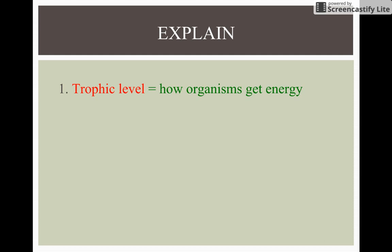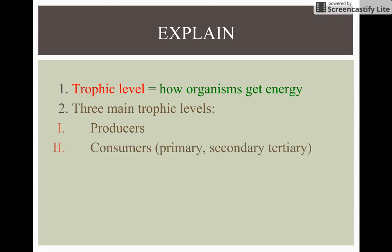Take this down in your notes for today. Trophic level is how organisms get energy. There are three main trophic levels: the producer, which gets energy from the sun; a consumer — primary, secondary, and tertiary — which eat a producer or other animals for their energy; and decomposers, like a mushroom or bacteria.